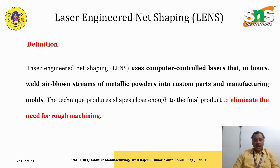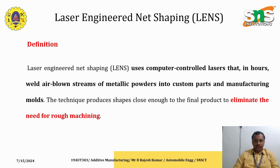LENS welds metallic powder layer by layer. This technique is similar to wire arc additive manufacturing, where the material is supplied in the form of wire, whereas here the material is supplied in the form of powder. In LENS, shielding gas is used, similar to wire arc additive manufacturing.